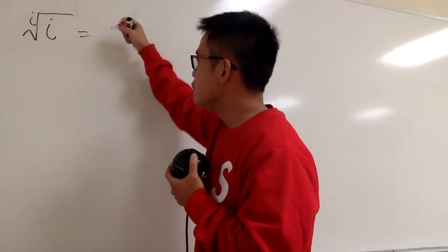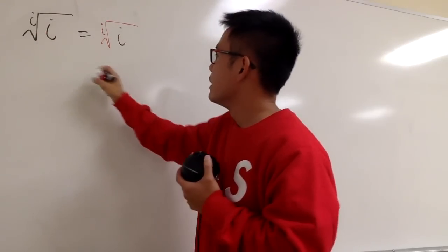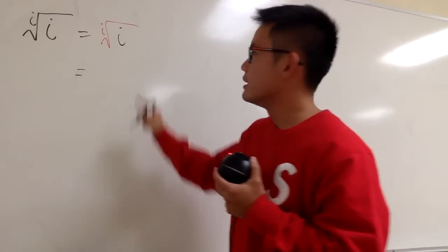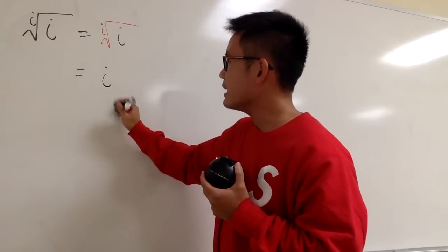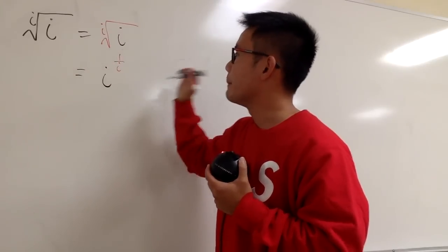So when we have the i-th root, let me just write this down in red of i, this is the same as the i for the base in black, but the i-th root becomes 1 over i power.